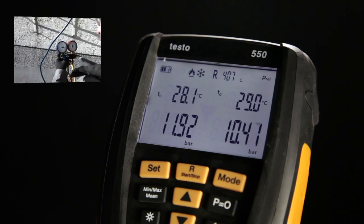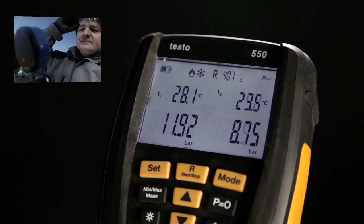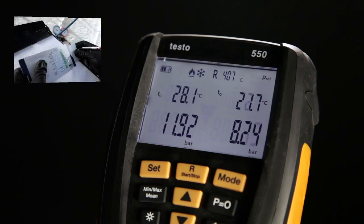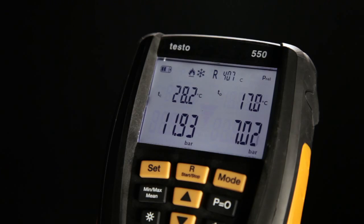The digital manifold from testo shows you the most important system parameters, superheating and sub-cooling, in real time. No calculation errors, no reading the wrong line, no estimates. You immediately see what's happening.